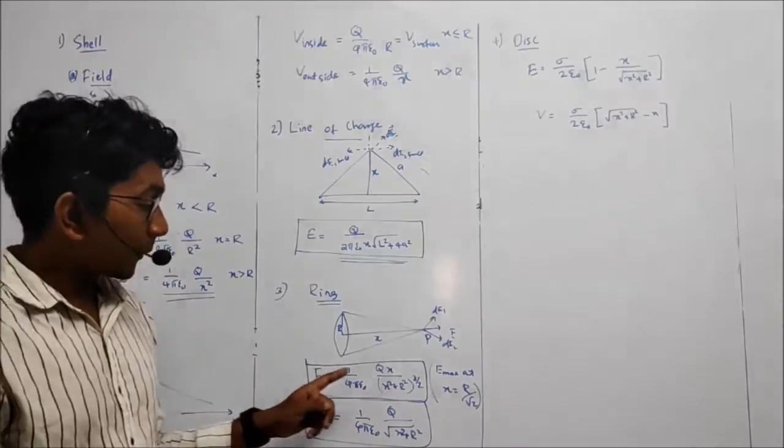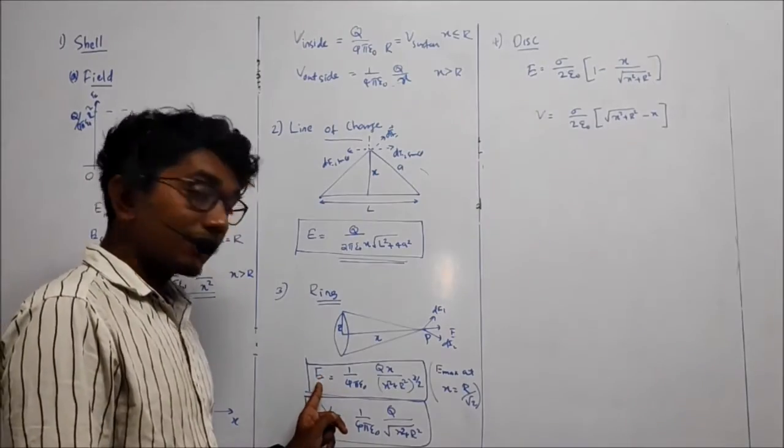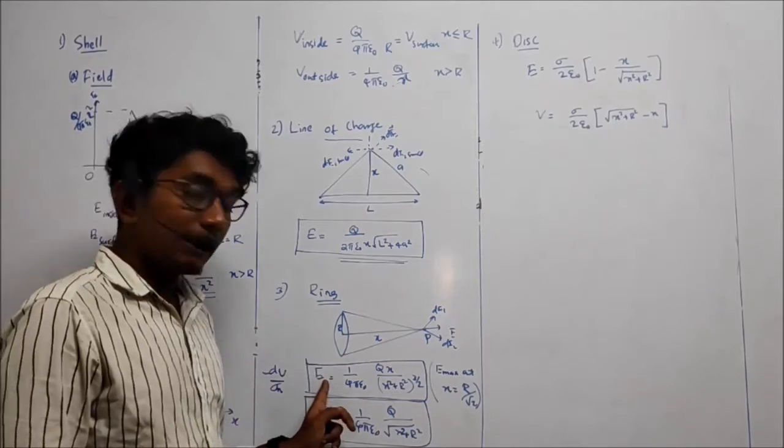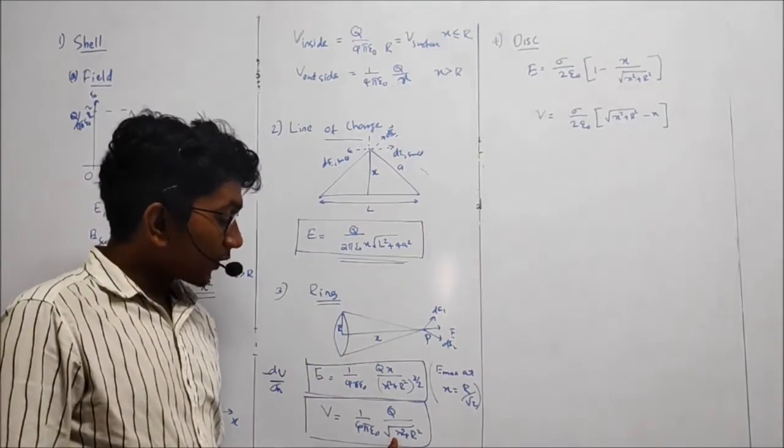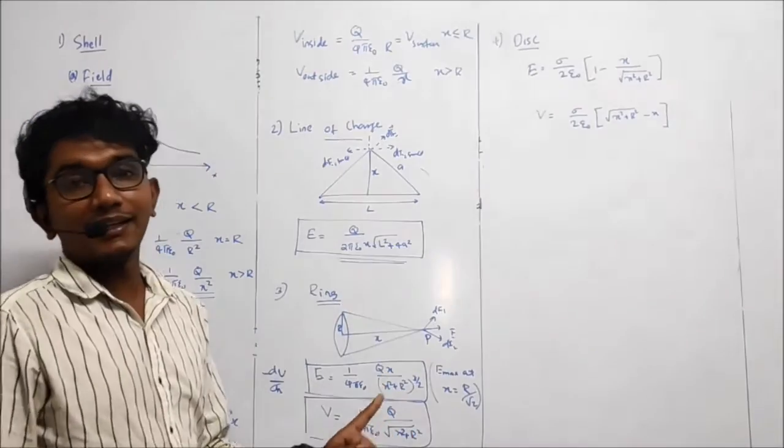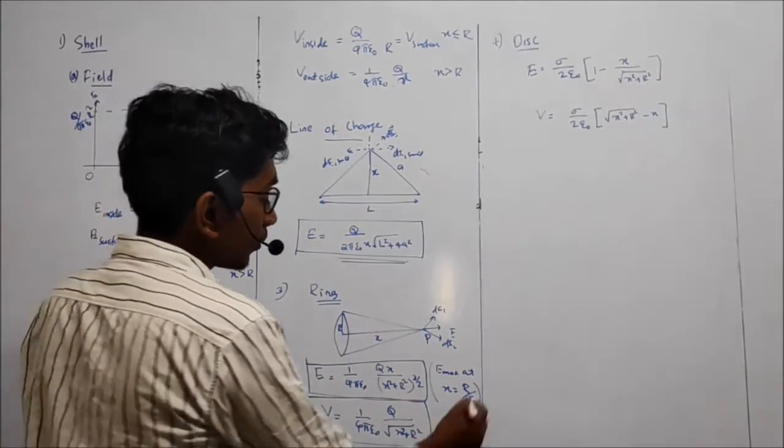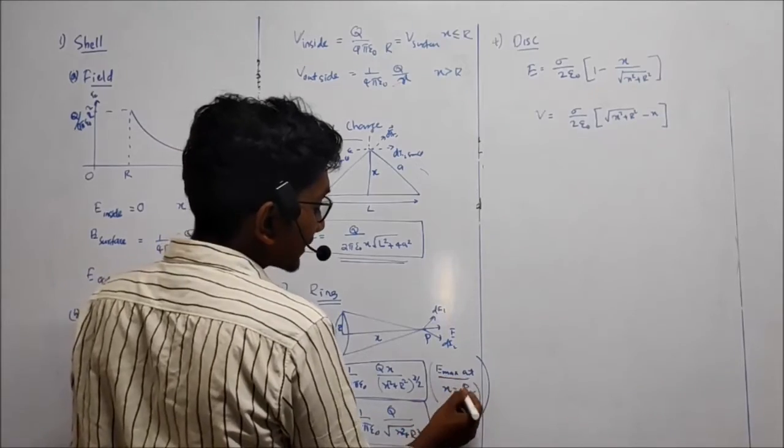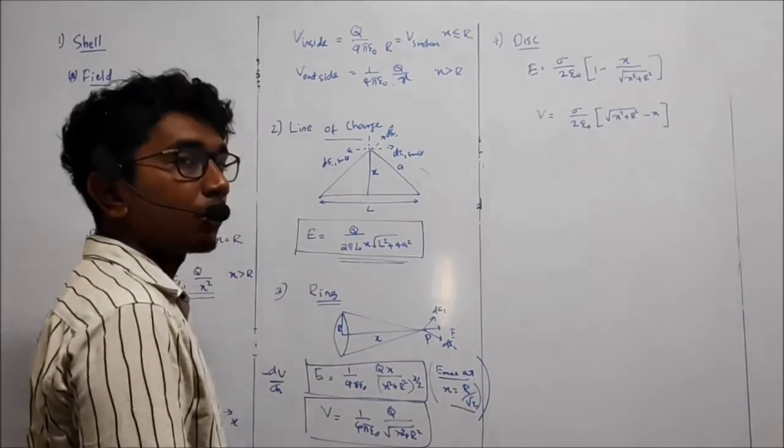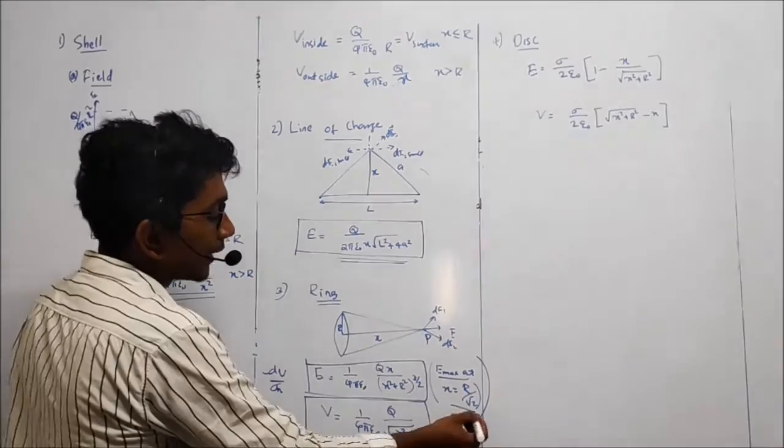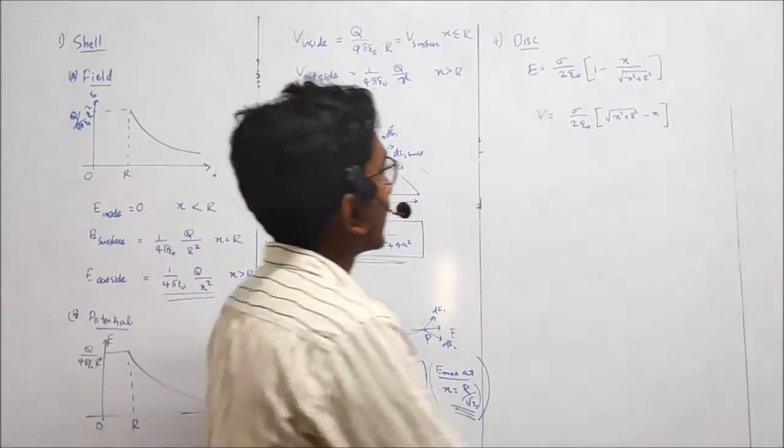One thing you have to keep in your mind. Look at this. Minus dv by dx, that is equal to e. So, look at this. This is all raised to 1 by 2. This is all raised to 3 by 2. That is the idea. All raised to 1 by 2 and all raised to 3 by 2. So, what is electric field? Maximum electric field line x is equal to r by root 2. You keep in your mind. x is equal to r by root 2.